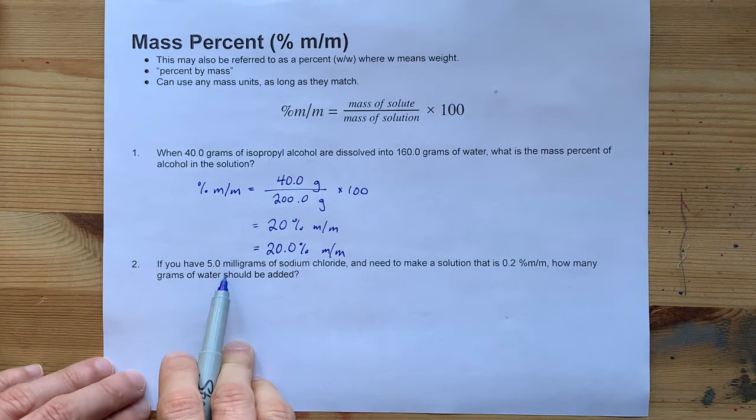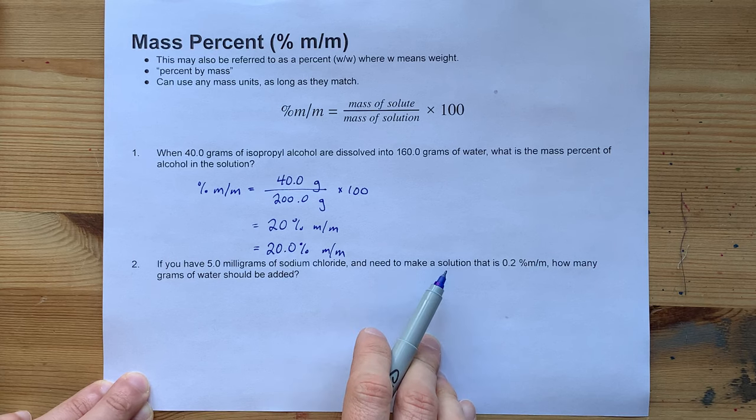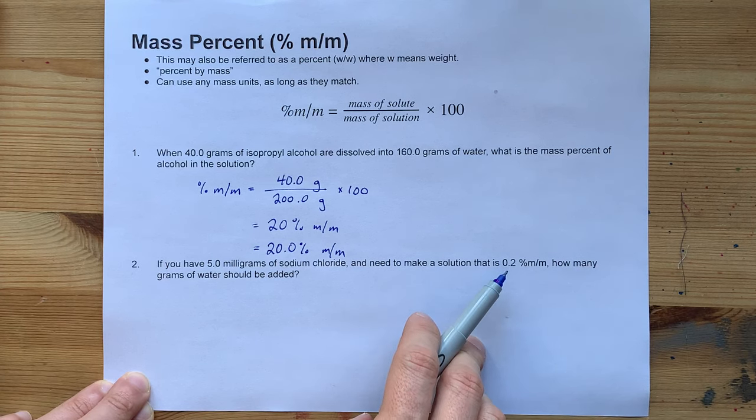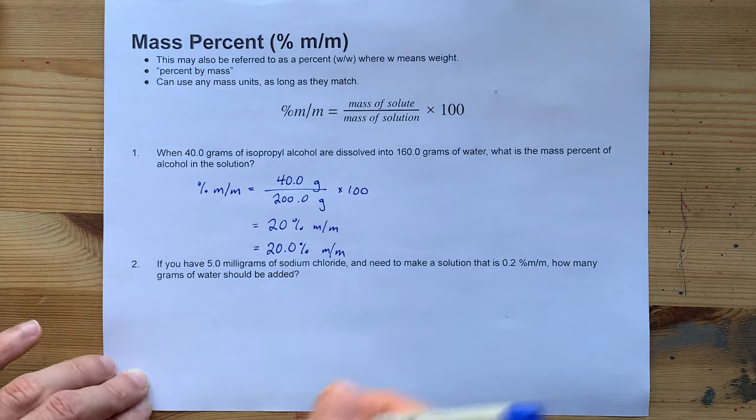In my second example here, we have five milligrams of sodium chloride, and we want to make a solution that is 0.2% by mass. How many grams of water should we add?